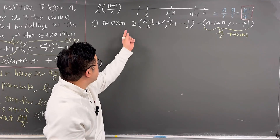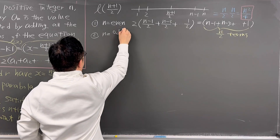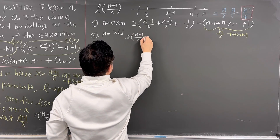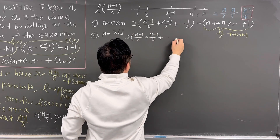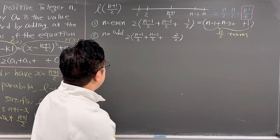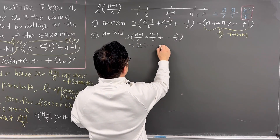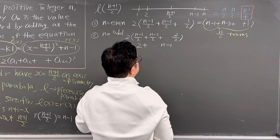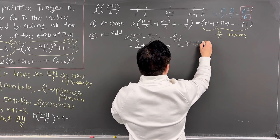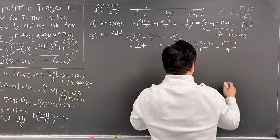Case 2: when n is odd, we have L((n+1)/2) = 2 × ((n-1)/2 + (n-3)/2 + ... + 2/2), which calculates to 2 + ... + (n-1). Using the formula, this equals (n+1)(n-1)/4 = (n² - 1)/4.